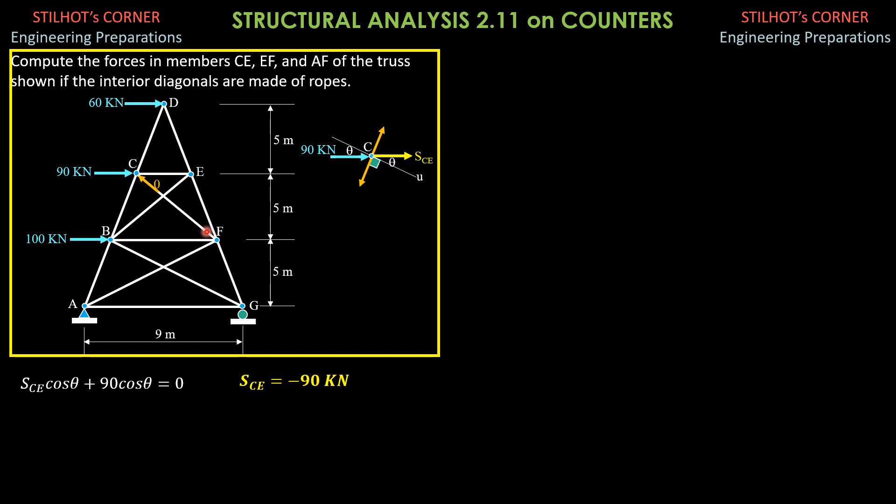We then proceed to computing the force of EF. We consider section AA as shown and above, so there's no need to compute for the reactions. Additional unknown forces or members that are sectioned by this AA would be BC, BE, and EF as shown. Take note that the other two unknowns, BC and BE, their lines of action meet at joint B. Considering forces above it, moment summation about B will enable us to solve for SEF because these two will not be involved.